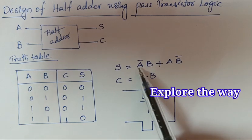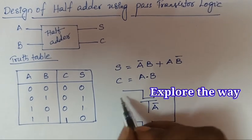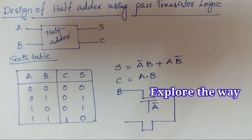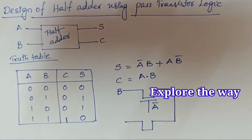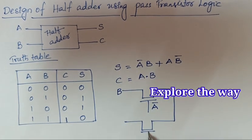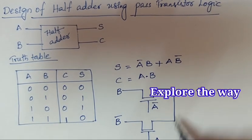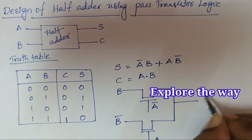The first term is A̅B, so here the control input is A̅ and the data input is B. For the second term AB̅, the control input is A and B̅ is the data input. This produces the sum output.